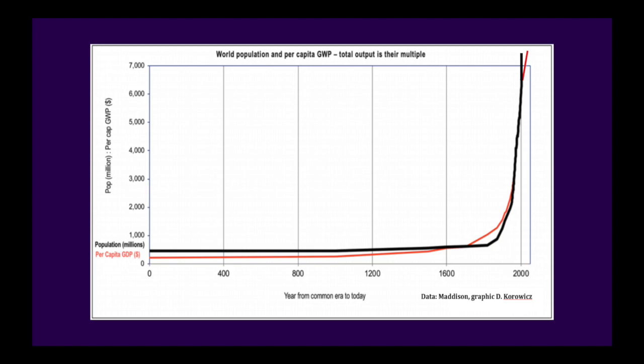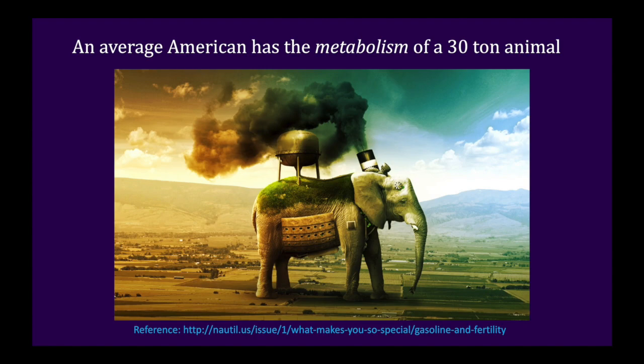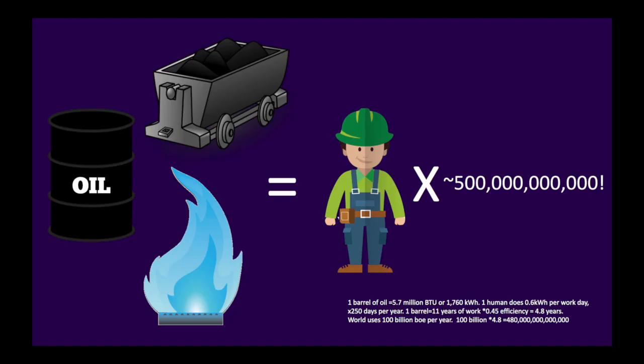Metabolically, we are not 180-pound human men and women. Americans have an energy metabolism equal to 30-ton animals. Globally, if we add up the 100 billion barrels of oil equivalent of fossil energy we use annually in the global economy, this equals around 500 billion human laborers worth of work. We only pay for the extraction cost, not the creation, nor the pollution from the main input to human economies.